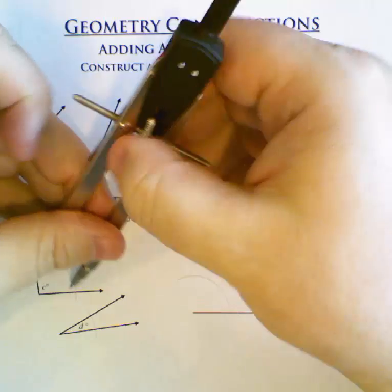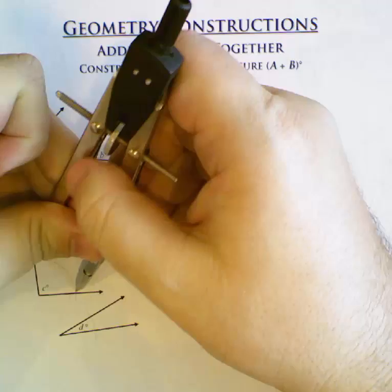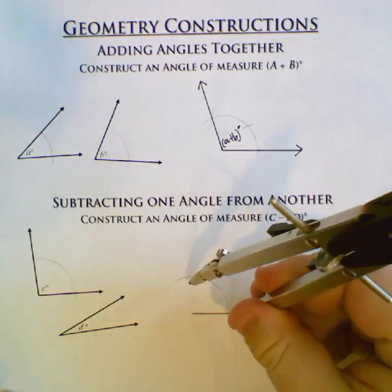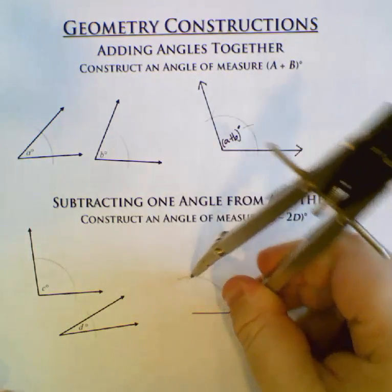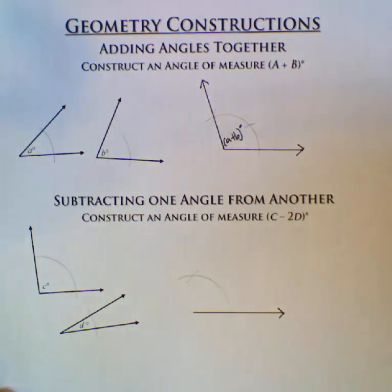So I'm going to copy C. I'll put C here. If I drew a line, that would be a successful copy of angle C. But I want C minus 2D, not C.